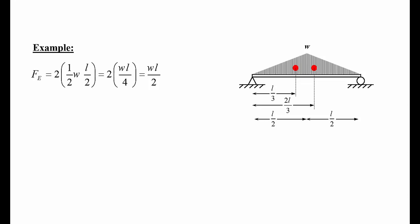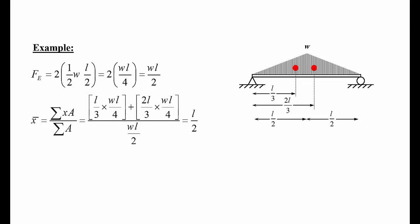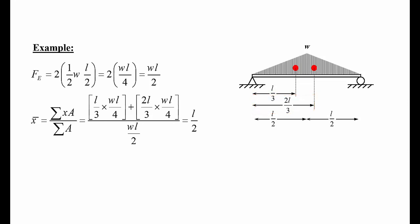For the global centroid: X̄ = ΣxA / ΣA. The local centroid of the first triangle is at L/3 from the left, and its area is WL/4. The local centroid of the second triangle is at 2L/3, also with area WL/4. So X̄ = (L/3 × WL/4 + 2L/3 × WL/4) / (WL/2) = L/2. So the global centroid of this symmetric triangular load is at mid-span L/2, as expected.